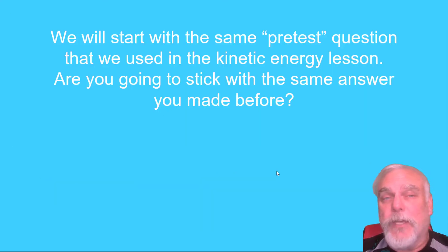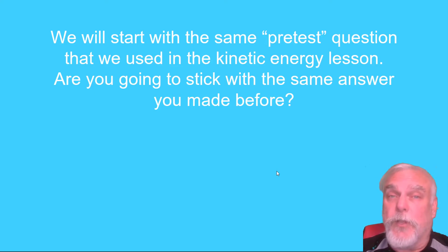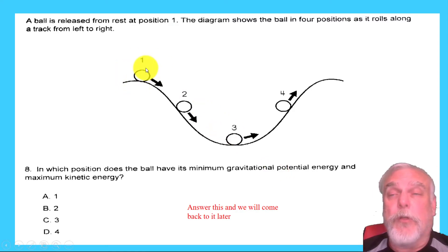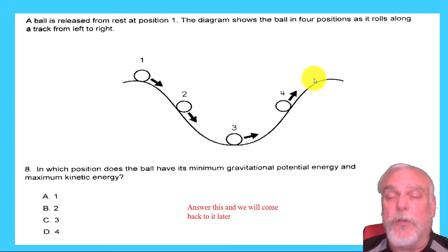We're going to start with the same pre-test question that we used during the kinetic energy lesson. Think to yourself: are you going to switch your answer or stick with the same answer you had before? Here's the question: a ball is released at rest at position one. The diagram shows the ball in four positions as it rolls down the track from left to right. In which position does the ball have its minimum gravitational potential energy, and which one does it have its maximum kinetic energy?